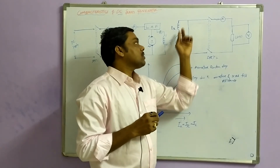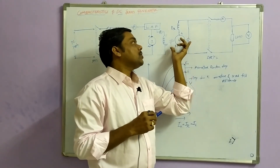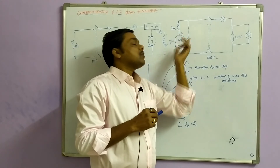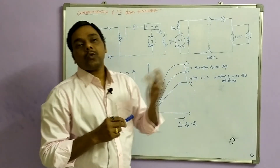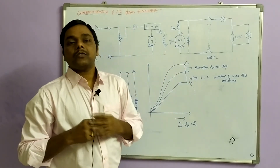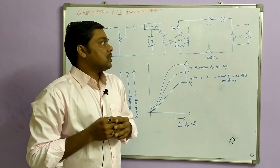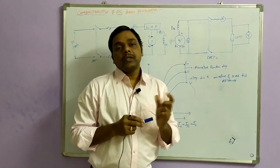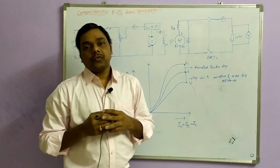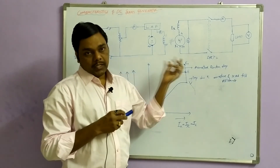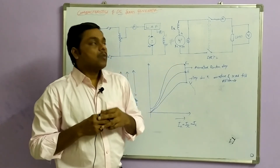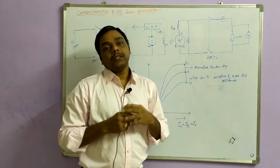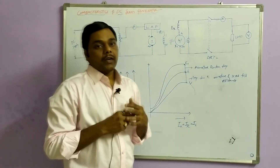Now since the DC generator armature, series, and load currents are all the same, I have to excite the series field winding separately so that I can get the field current versus no load EMF characteristics. Since field current is also connected in series with the armature, the current flowing through the field winding will be equal to the armature current, so load current is also produced. That's why I have to excite separately the series winding of the DC series generator to find out the induced EMF.